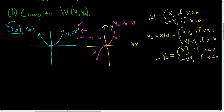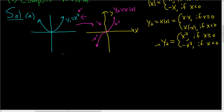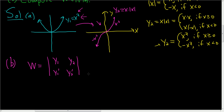Let's go ahead and do part B. Part B wants the Wronskian. Recall the Wronskian is equal to the determinant of y1, y1 prime, y2, y2 prime. So what we'll do is take cases.